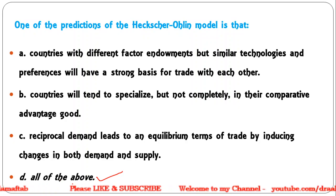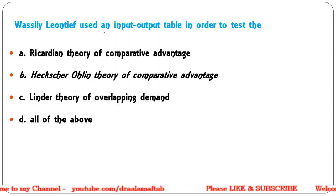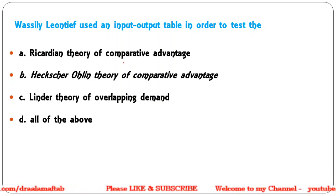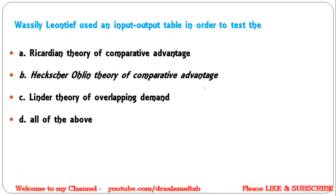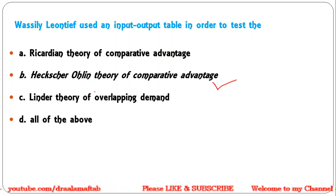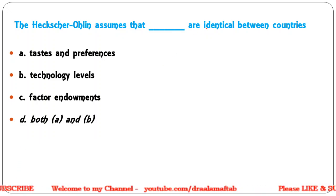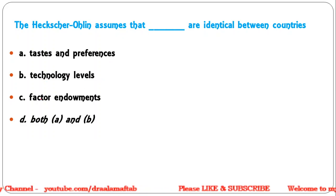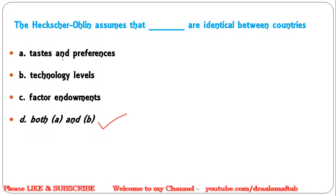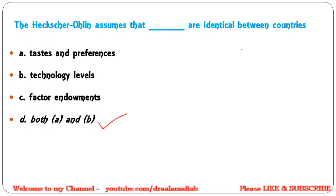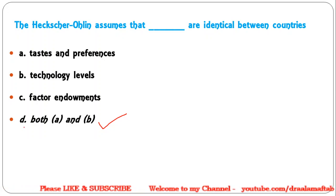Next: Wesley Leontief used an input-output table in order to test the — Ricardian theory of comparative advantage; Heckscher-Ohlin theory of comparative advantage; Linder theory of overlapping demand; all of the above. Correct answer: the Heckscher-Ohlin theory. Next: Heckscher-Ohlin assumes that the following are identical between countries — tastes and preferences; technology levels; factor endowments; both A and B. Correct answer is both A and B — Heckscher-Ohlin assumes tastes, preferences, and technology are identical; it is the difference in factor endowments that leads to trade.